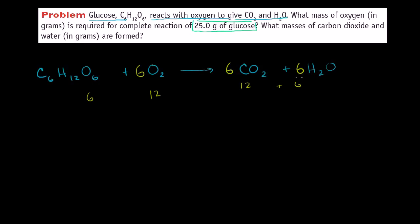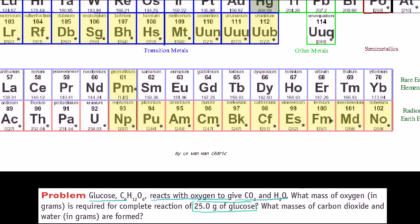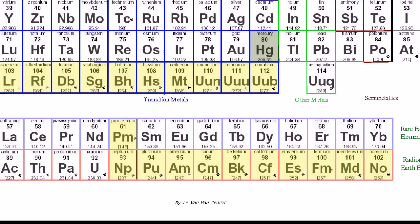The next thing we want to do is figure out how many moles of the reactant we have. We're told we have 25.0 grams of glucose, so let's figure out how many grams per mole there are of a glucose molecule. Since everything here involves carbon, oxygen, and hydrogen, let's look up the atomic weights. These are pretty common elements, so at some point you might want to memorize their atomic weights.